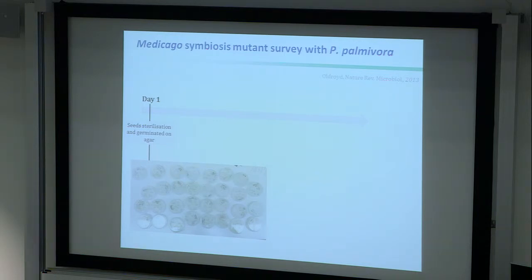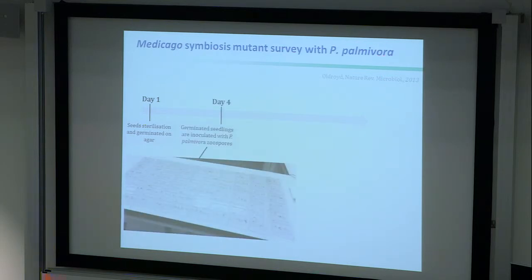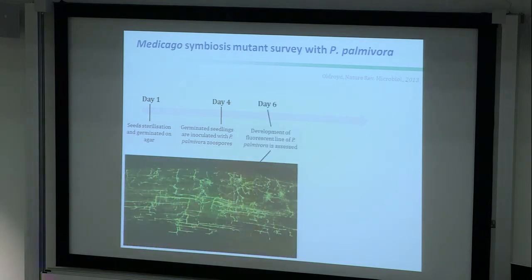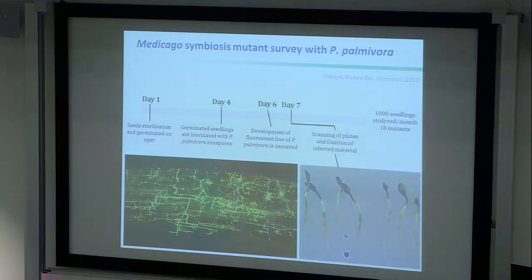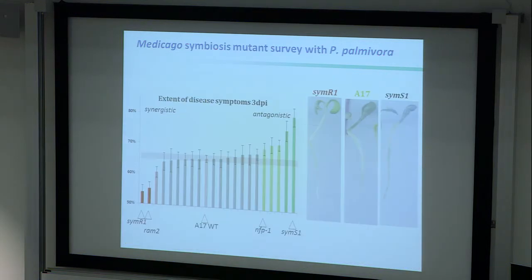Here's another benefit of using Phytophthora: a mycorrhizal interaction with beneficial fungi takes about four weeks to establish, but we can do this screen in a week. We germinate Medicago seedlings on day one, inoculate them with Phytophthora palmivora zoospores on day four, and by day six we already have colonization. We quantify it by measuring the size of disease symptoms relative to root length and plot symptoms versus root length.